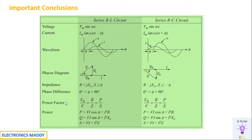Power factor is generally cos φ. Based on that, cos φ = V_R/V = R/Z = P/S, based on the voltage triangle, impedance triangle, and power triangle respectively. Any of these three equations can be used: if they give you R and Z, use R/Z; if they give you V_R and V, use that formula. Depending upon the context of the problem, we have to apply them.